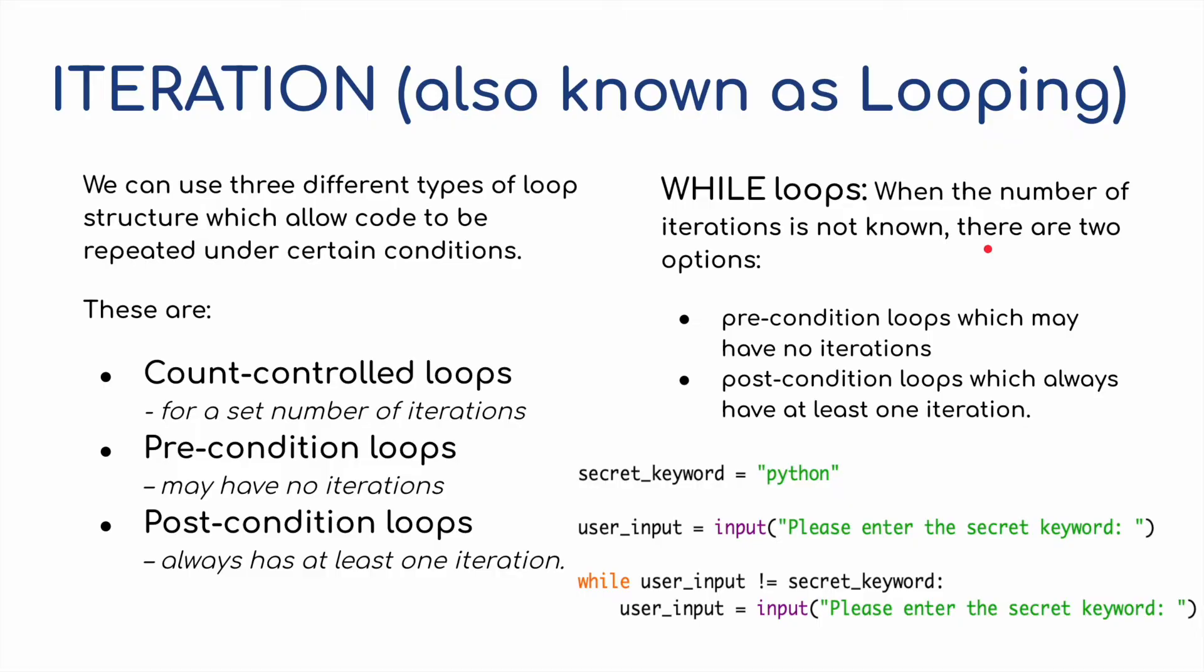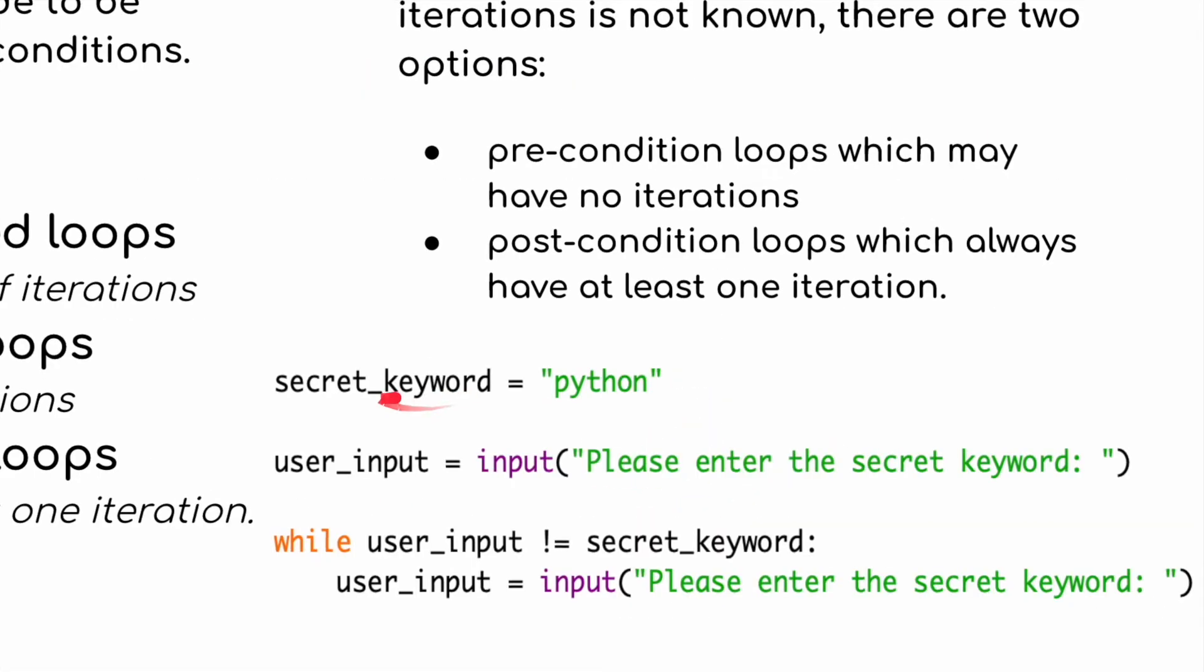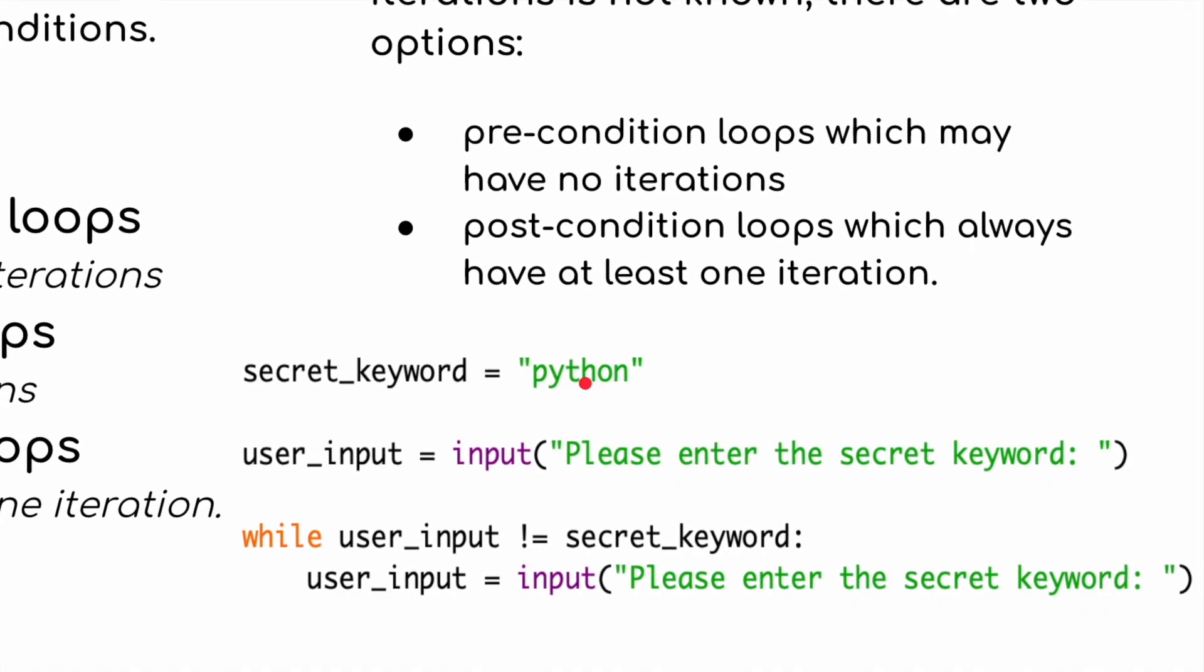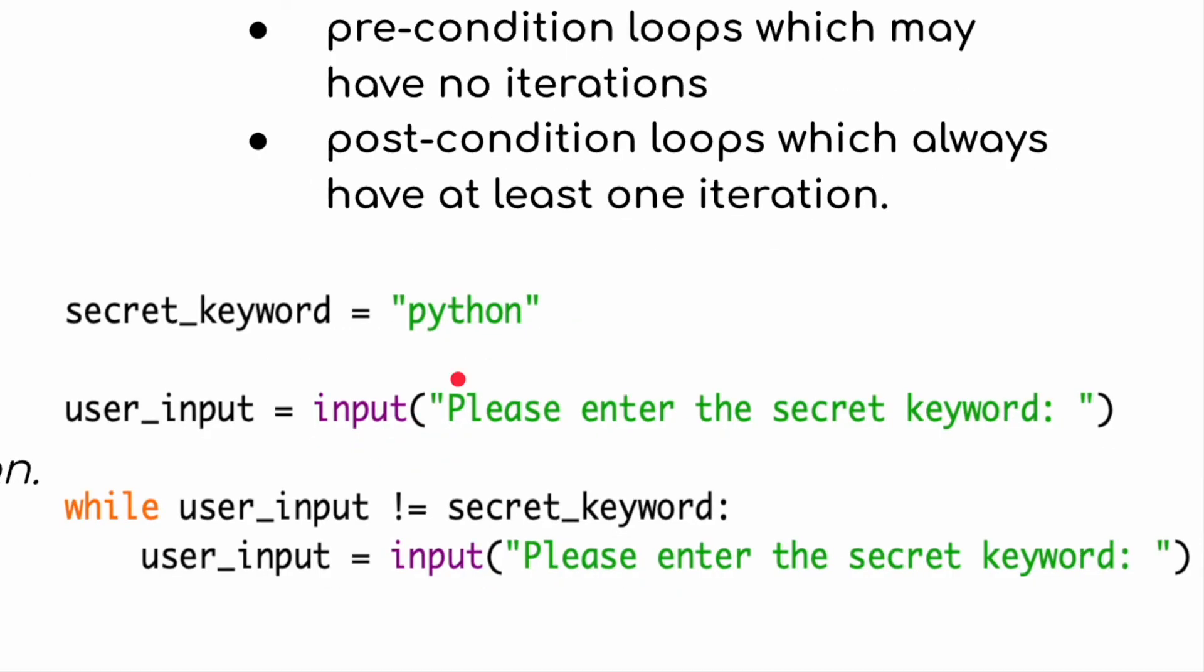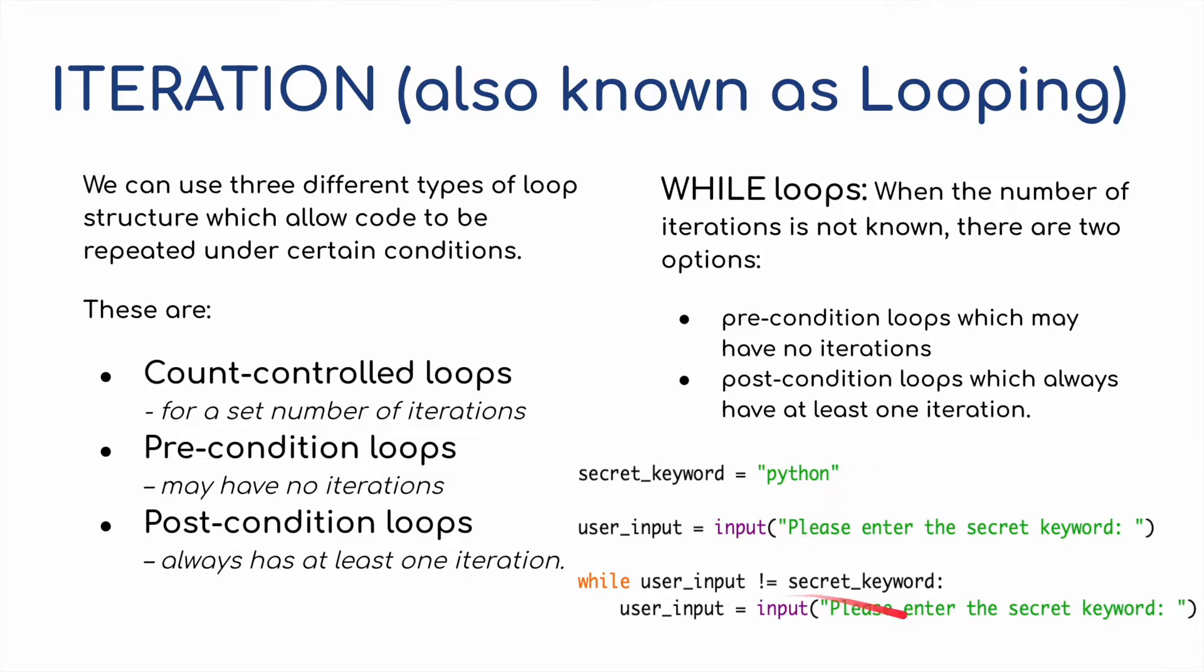We also have a while loop, and this is used when the number of iterations is not known. There are two options, either a preconditioned loop, which may have no iterations, or a postconditioned loop, which always has at least one iteration. So I have a password, a secret password, a secret keyword here called Python. The user is able to input the secret word, so please enter the secret word. While the user's input does not equal the secret word, the user input, this basic line repeats. And again, I'll show you this in Python.